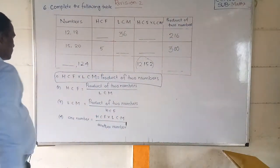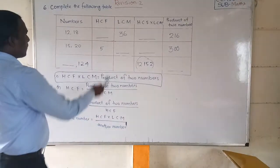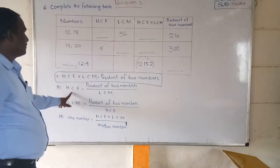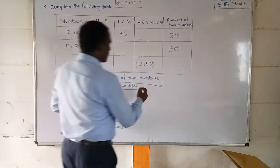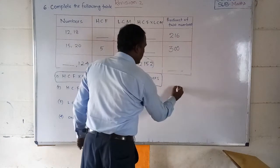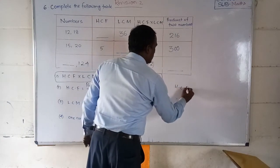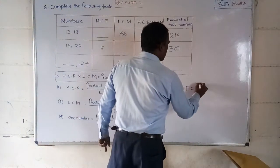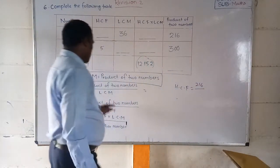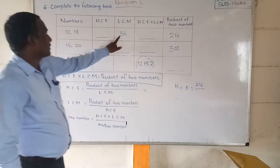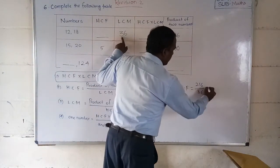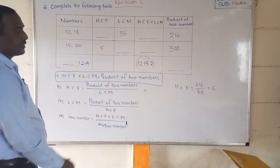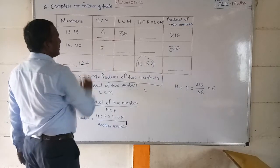Which formula out of these four is applicable? First of all, we have to find out the HCF, so we use the second formula: HCF is equal to product of the two numbers divided by LCM. The product of the two numbers is 216, divided by LCM which is 36. So you divide, and the answer is equal to 6.